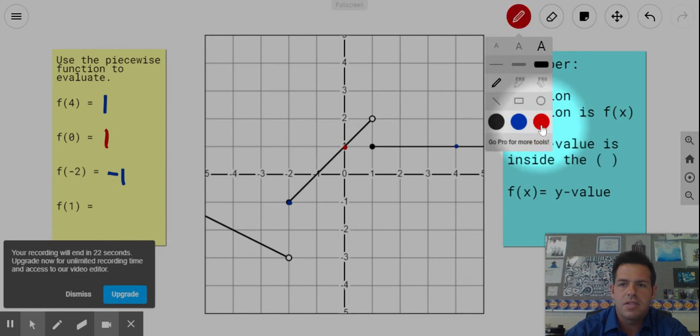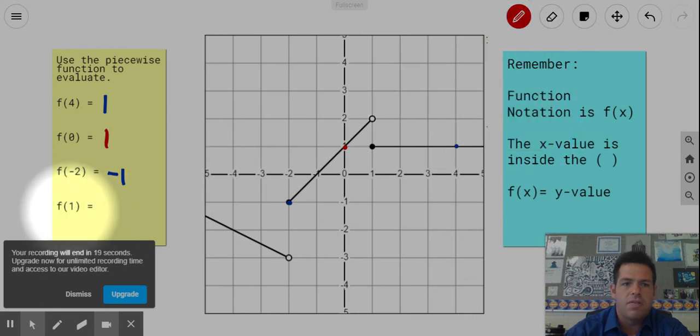Last one here, same situation. We have the function of one. We look up, we look down, we have two dots. One of them is colored in. That's the one that counts for us here. Our x value is one. Our y value is one also.